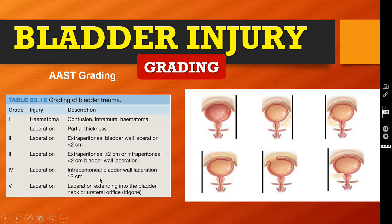Grade 4 is intraperitoneal bladder wall laceration more than 2 centimetres. Grade 5 is laceration extending into the bladder neck, ureteral orifice, or trigone. This is the grading to know the severity of the bladder injury. This AAST grading is very important — all of you must know this grading.